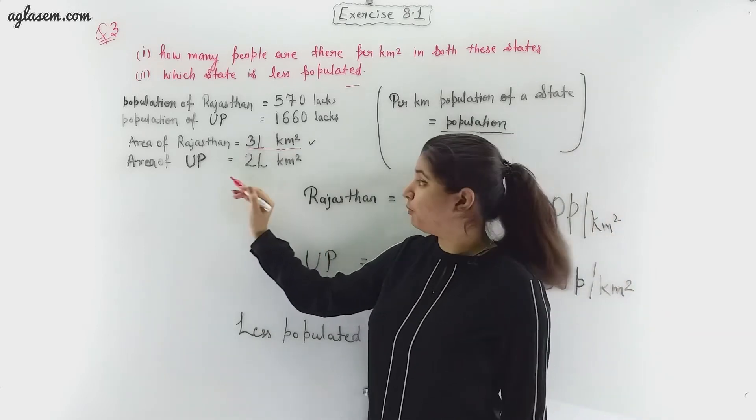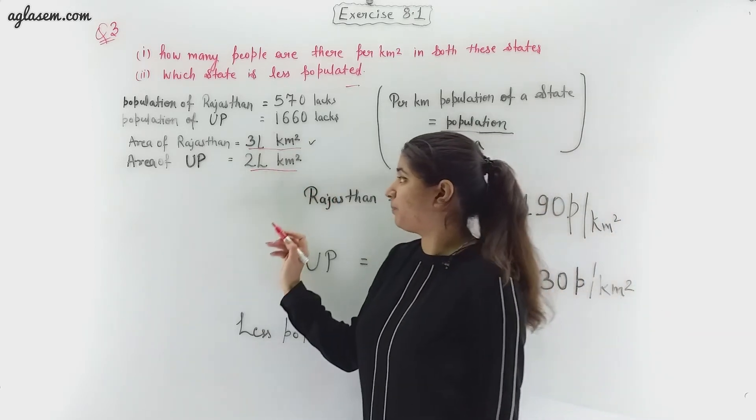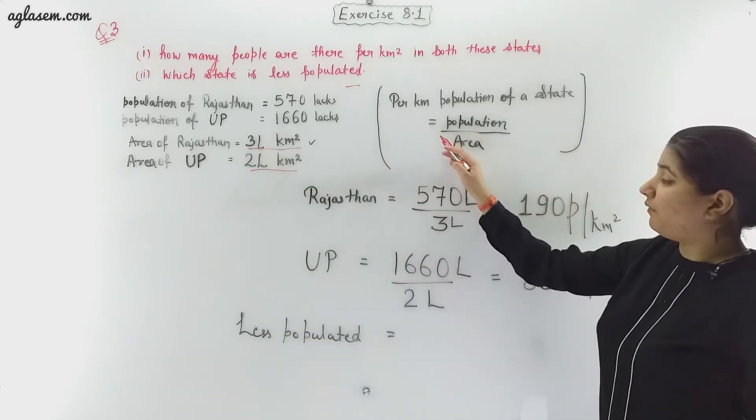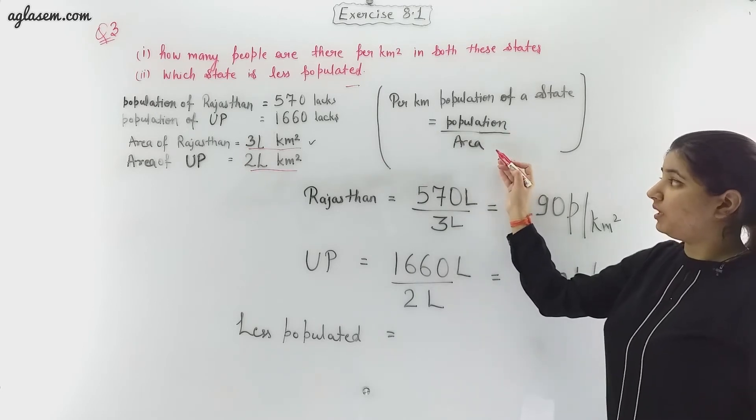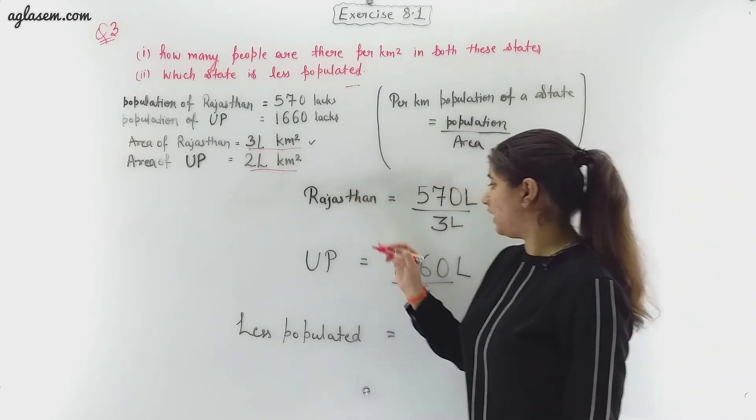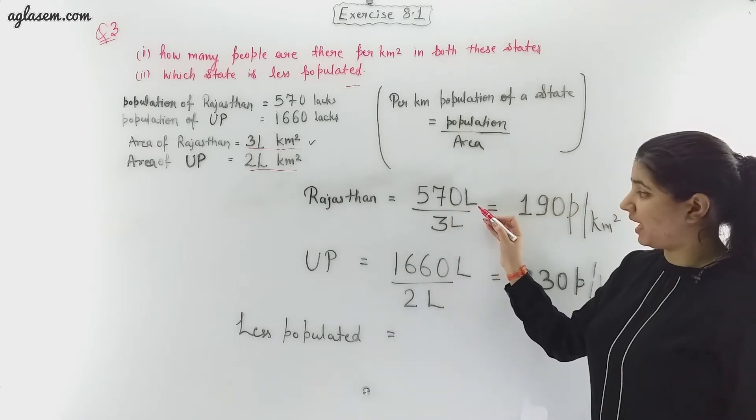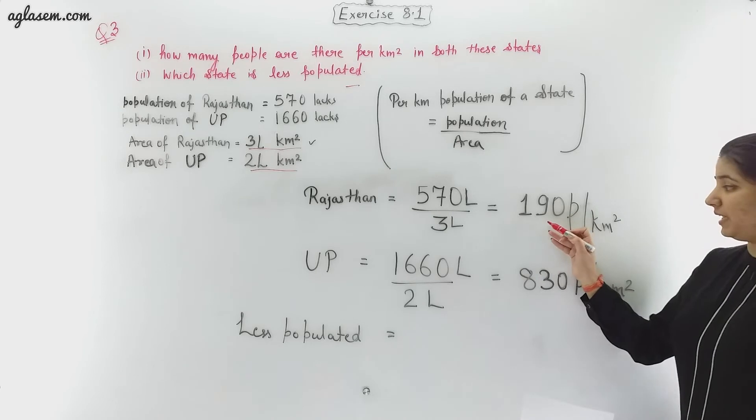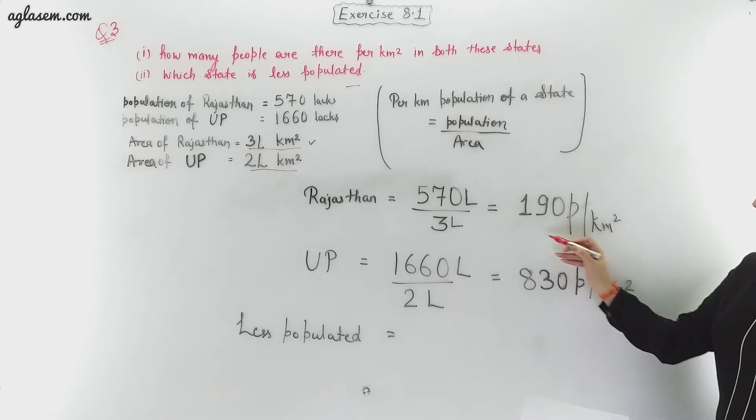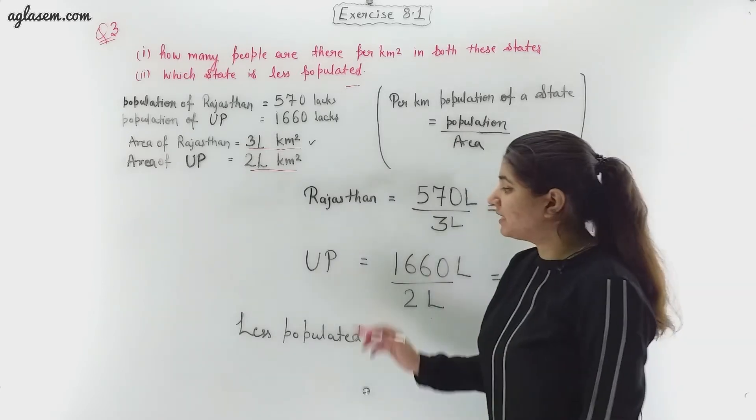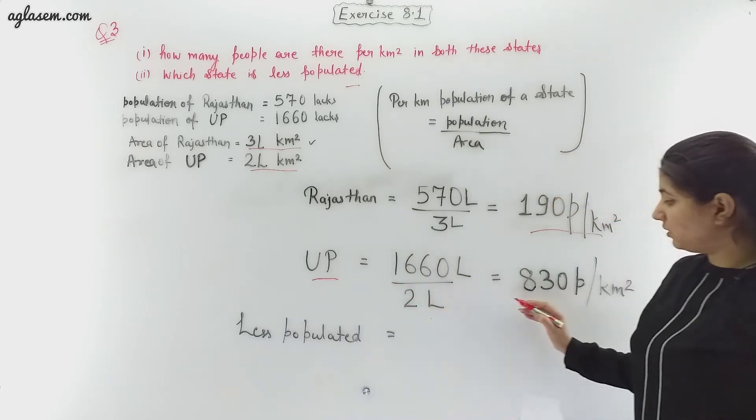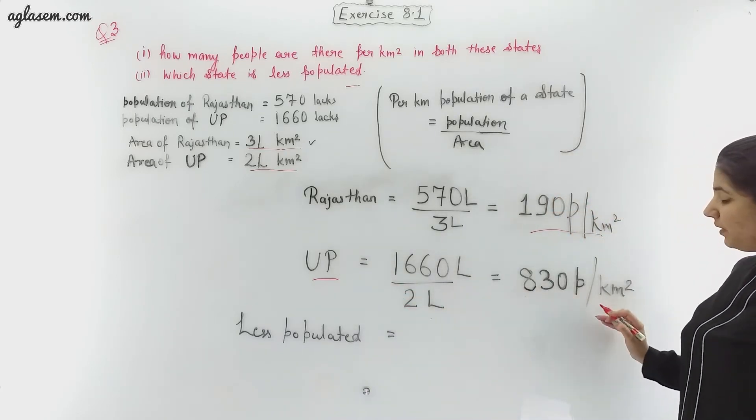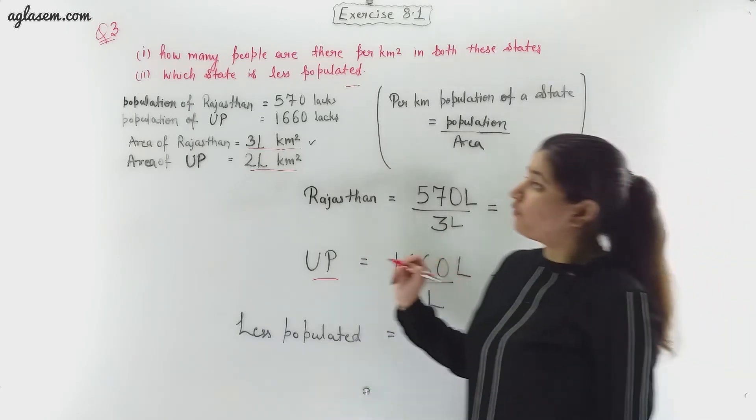To find that we have to use this formula: population divided by area. Accordingly, for Rajasthan it turns out to be 570 lakhs upon three lakhs which is 190 people per kilometer square. Similarly, for UP the answer will be 830 people per kilometer square.